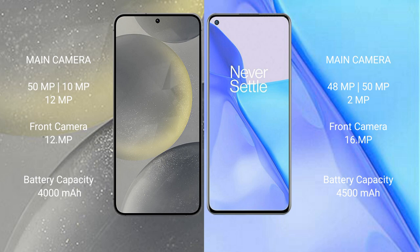Samsung Galaxy S24 has a 4000mAh battery with 25W fast charging support. OnePlus 9 has a 4500mAh battery with 65W fast charging support.